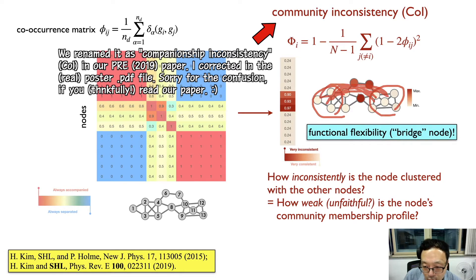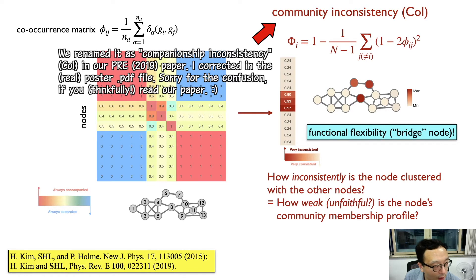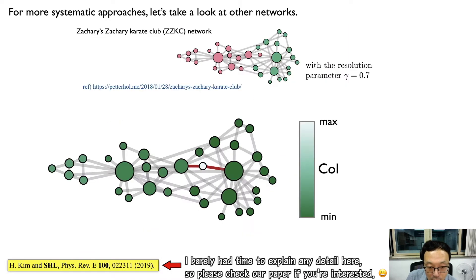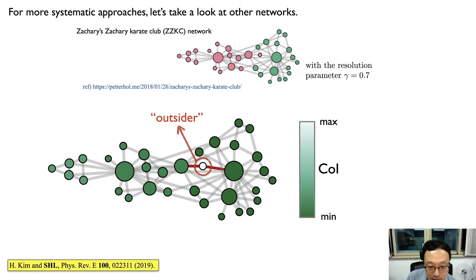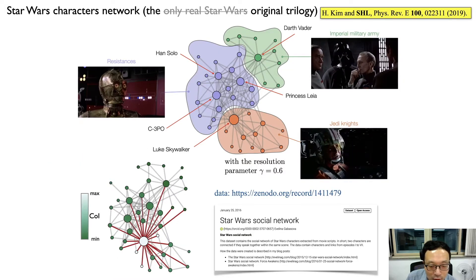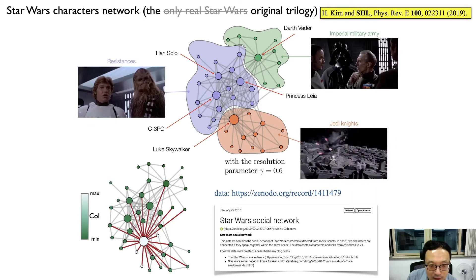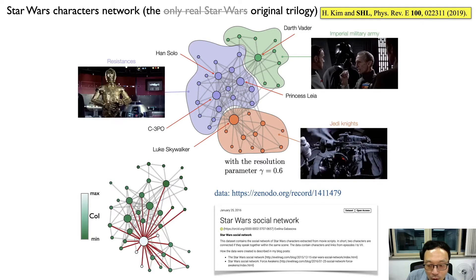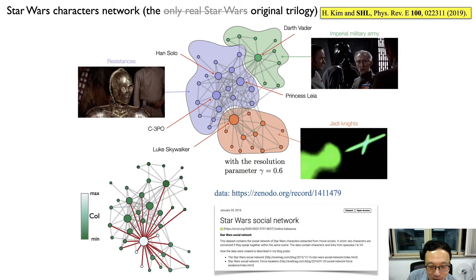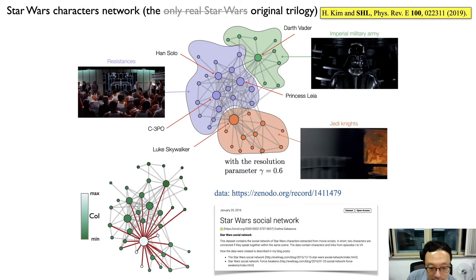COI represents the functional flexibility or bridge node somewhere between one tightly bound group and another, mediating between these two groups, which is of course very important in various types of real-world networks. We found some interesting examples, like an outsider node in Zachary's Karate Club network, where he has very large values of community inconsistency but with a small number of friends. In the Star Wars character network, we identified Luke Skywalker — the main protagonist of the entire series — who has large values of community inconsistency. That doesn't mean he's an outsider; because he's the main character, he naturally interacts with lots of friends and enemies from the light side to the dark side. So we named him a multiplayer.